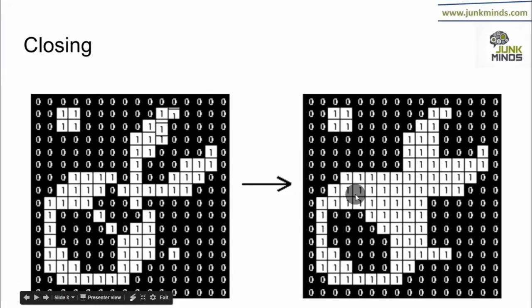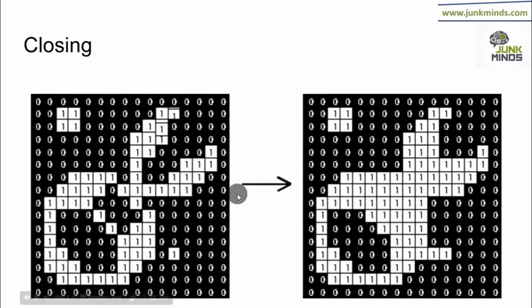The next is closing. Closing tends to enlarge the boundaries of the foreground — that is, the foreground region is increased. It is done by first performing a dilation and then following it with an erosion.